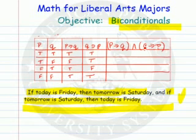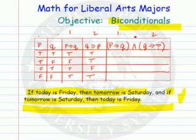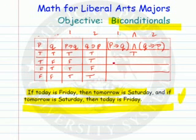Now let's combine them. We'll take column one and column two and put AND between them — this is the conjunction. True and true is true, false and true is false, true and false is false, true and true is true.